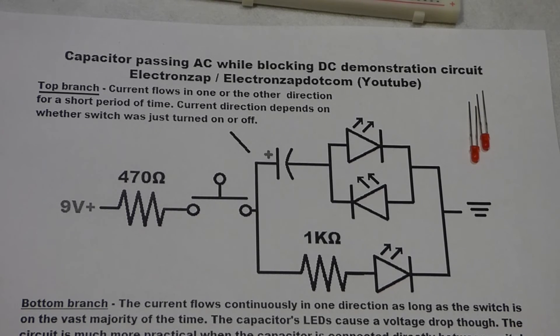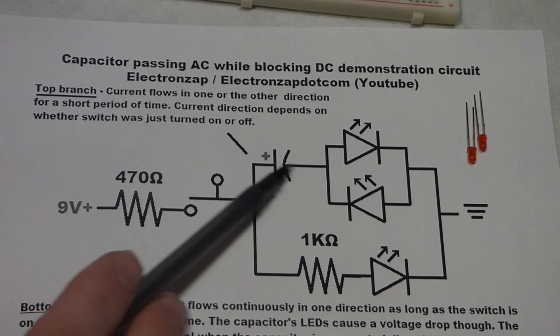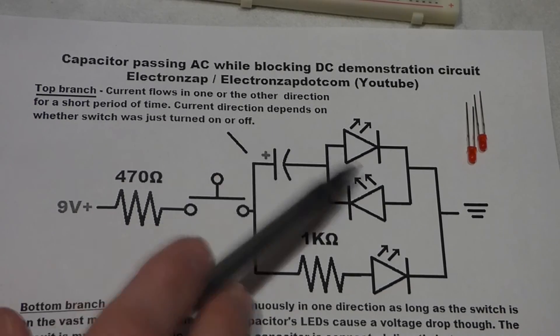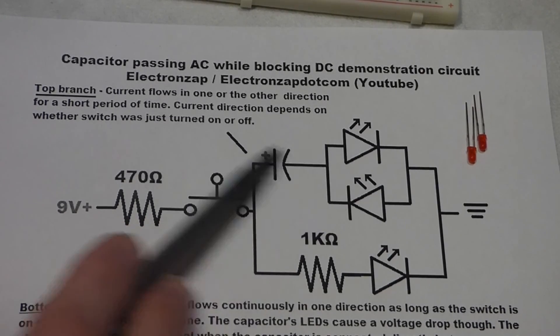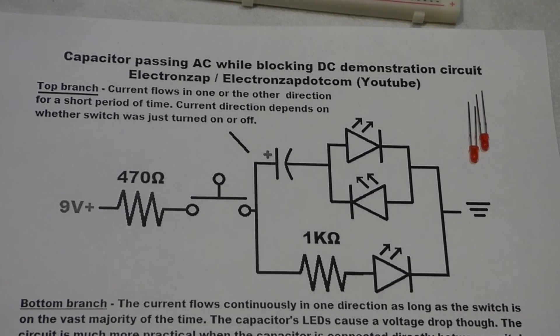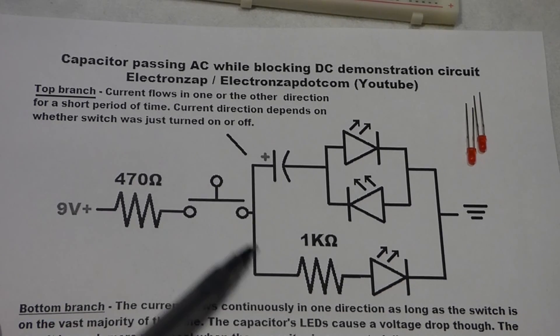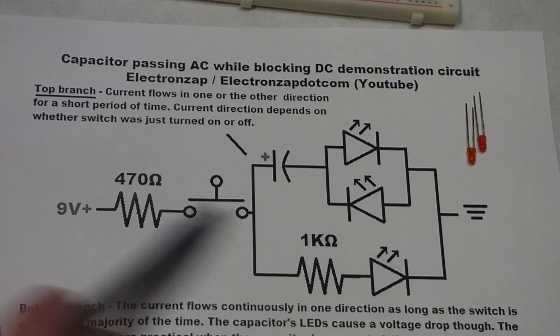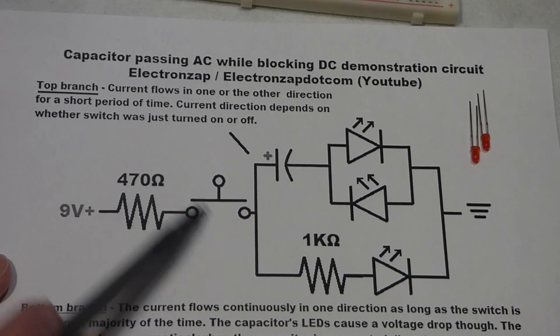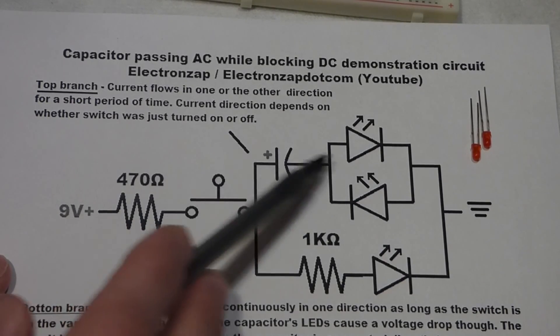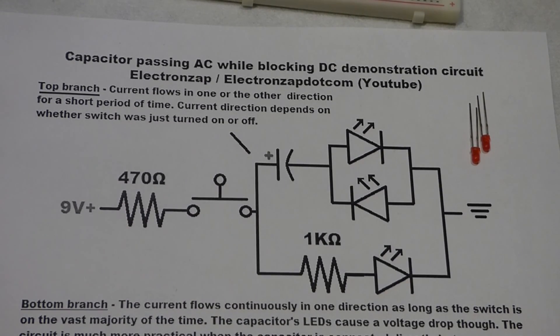But the main point of this circuit was to show that the alternating current was able to move in the part of the circuit that the capacitor is in, and it also blocked the direct current. When we held the switch down, the current couldn't go through the capacitor. It was blocking it.